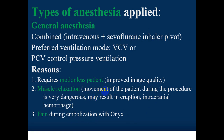For arteriovenous malformations, general anesthesia is chosen — combined intravenous and inhalational, with sevoflurane preferred. Ventilation mode is typically pressure-control ventilation. General anesthesia is required because the patient must remain motionless to improve image quality, prevent rupture, and allow muscle relaxation, as movements during the procedure — especially when catheters are placed at distal vessel locations — can be dangerous and result in intracranial hemorrhage.